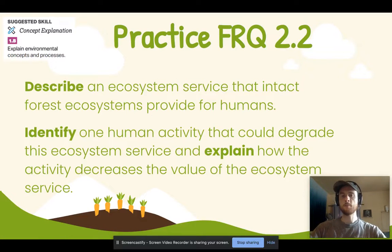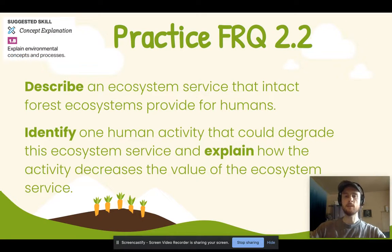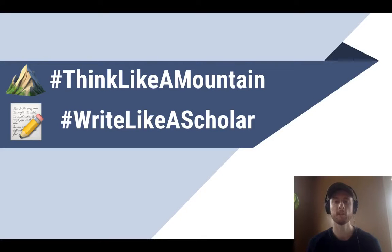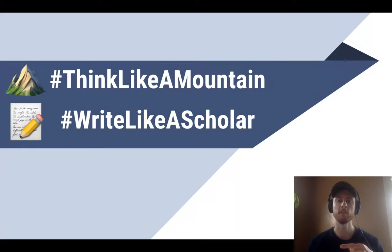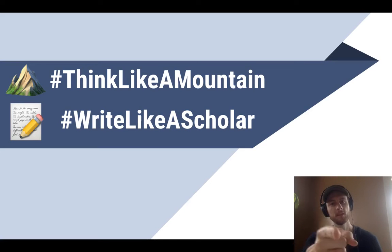Our practice for topic 2.2 today involves the skill of explaining an environmental concept or process. Describe an ecosystem service that intact forest ecosystems provide, then identify a human activity that could degrade or devalue that ecosystem service, and explain how that activity actually decreases its value. Thanks for tuning in — don't forget to like this video if it was helpful, subscribe for future APES video updates, and as always, think like a mountain, write like a scholar.